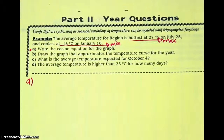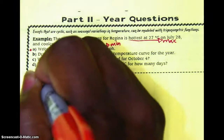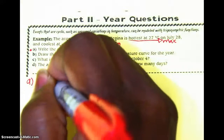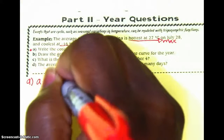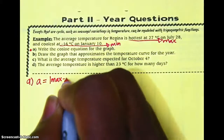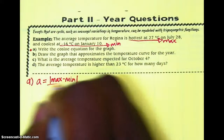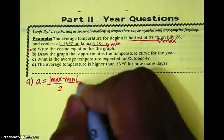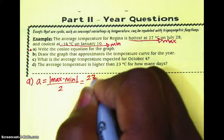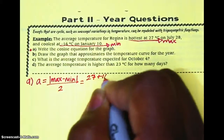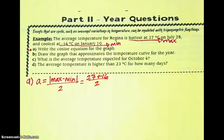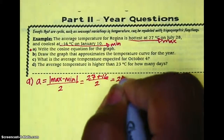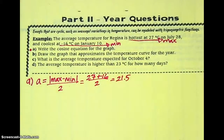First, we need to know the amplitude. The amplitude is represented by A. You can find it by taking the absolute value of the max minus the min, and then dividing that by 2. If we do this, we end up with 27 plus 16 — because subtracting a negative creates a positive — and dividing out, we end up with the number 21.5.